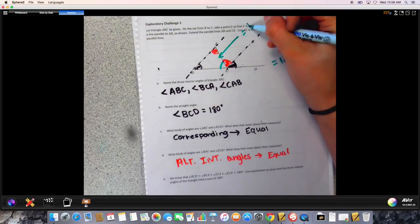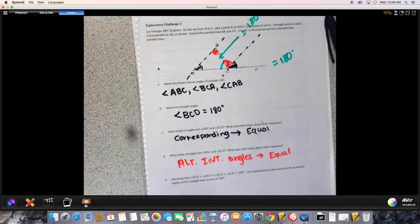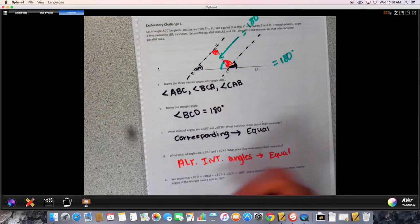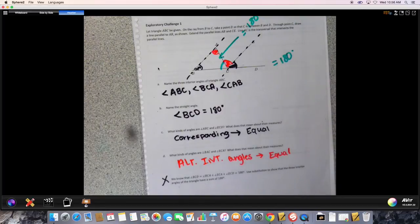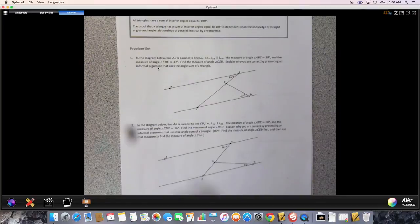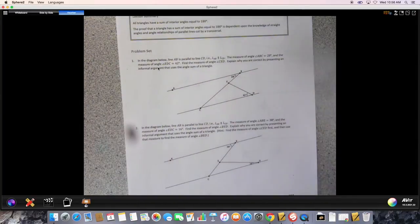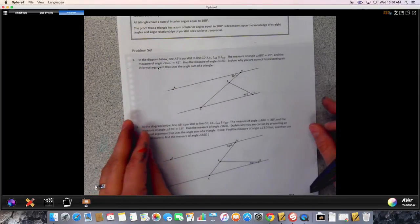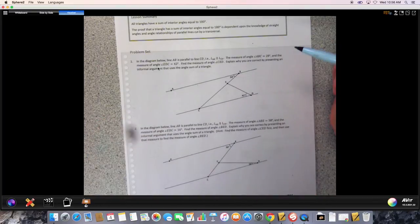That's a proof and we're going to use all of these ideas. We're not going to write this out formally right here today, we'll come back to that. We're going to actually skip today the next page, Exploratory Challenge 2, and move on to the problem set on page 69. I'm going to do one of them with you for the video, and then the homework will be to complete numbers 1 through 9.